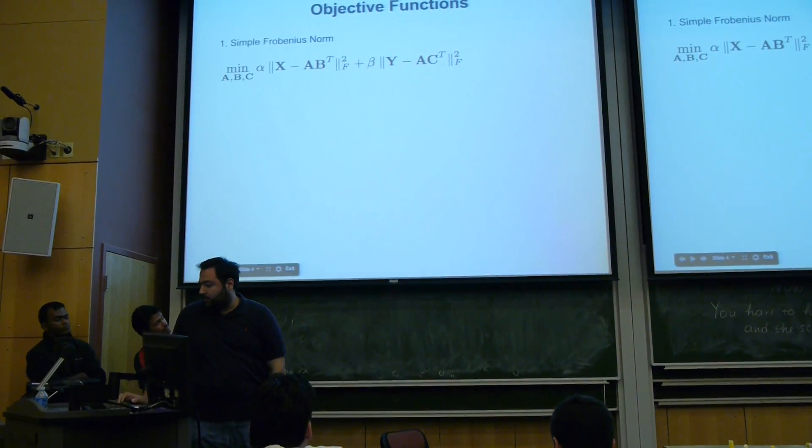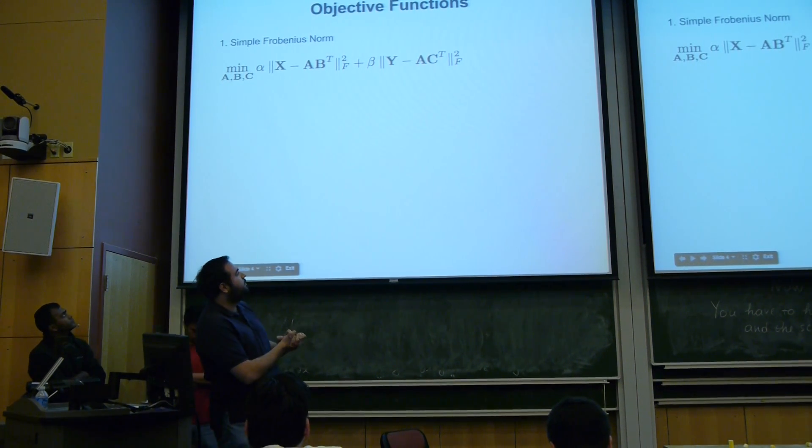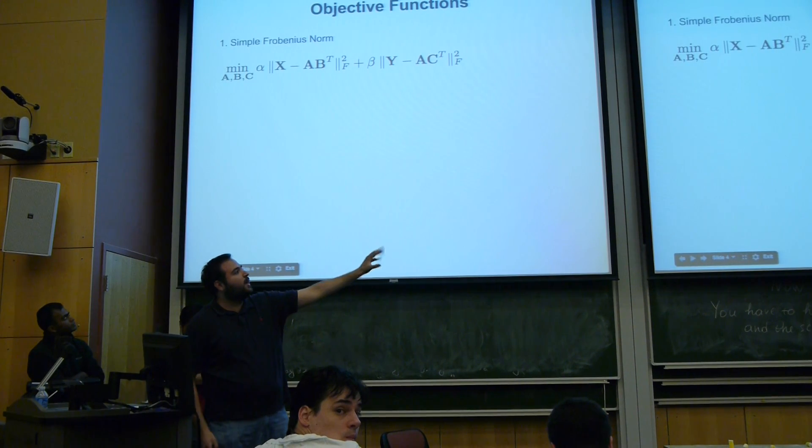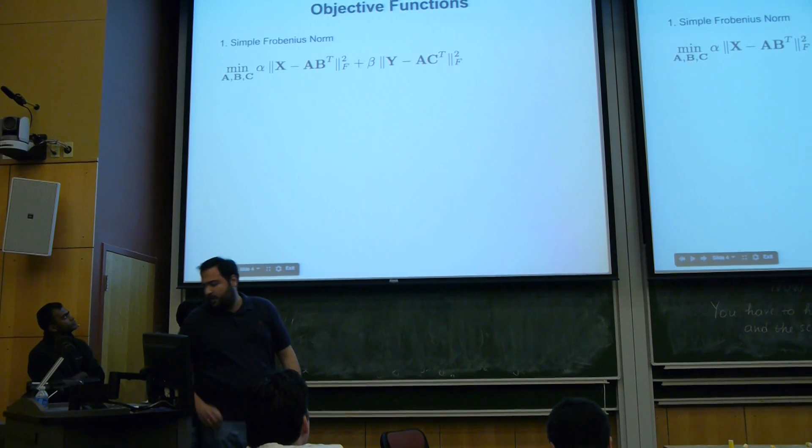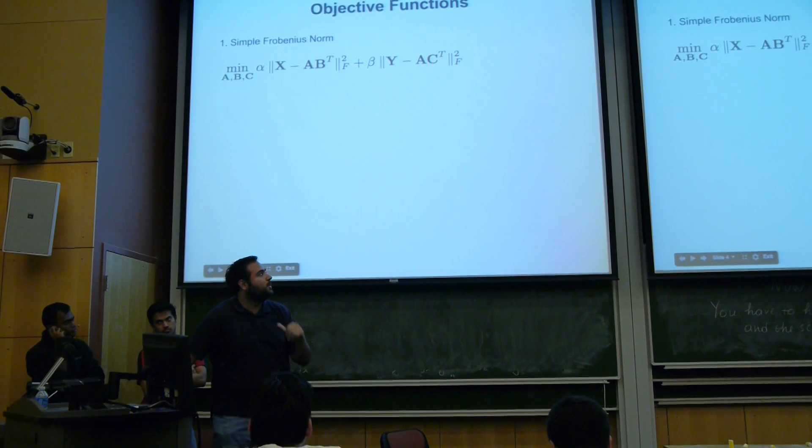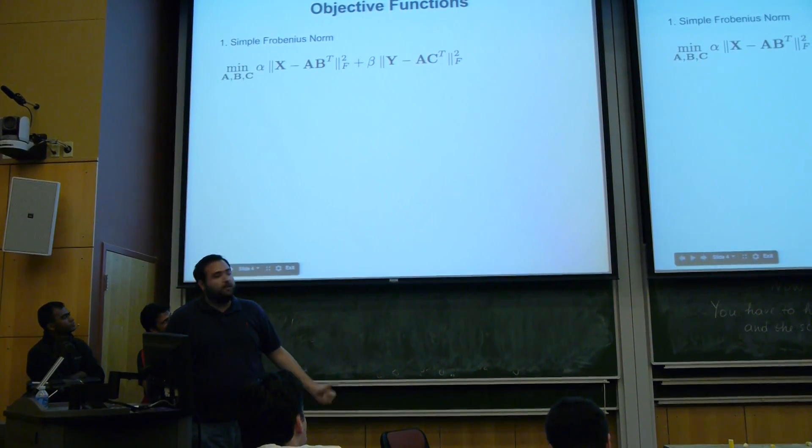Here are our objective functions. First one is the beast you see over there, which is matrix X is Netflix, matrix Y is IMDB. And we break down X into AB transpose. And we break down Y into AC transpose using A as a common factor. Which means that we assume that movies in both data sets share the common low rank subspace. And we use the Frobenius norm as a loss.